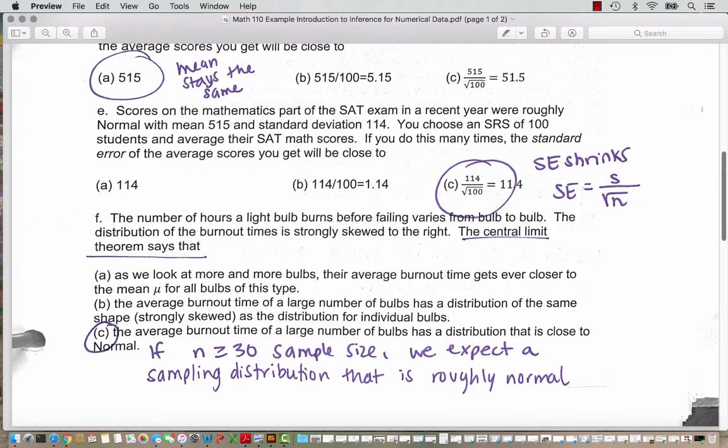Question E. Scores on the mathematics part of the SAT exam in a recent year were roughly normal with mean 515 and standard deviation 114. You choose an SRS, so again the same simple random sample, of 100 students and average their SAT math scores. If you do this many times, the standard error of the average score you get will be close to.